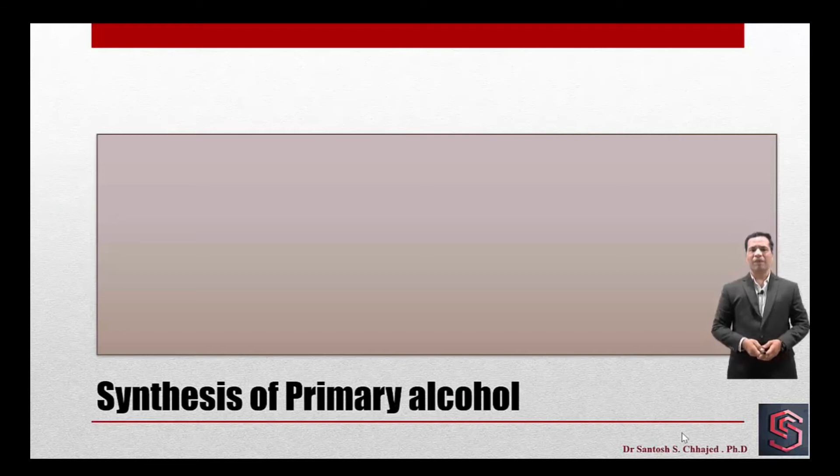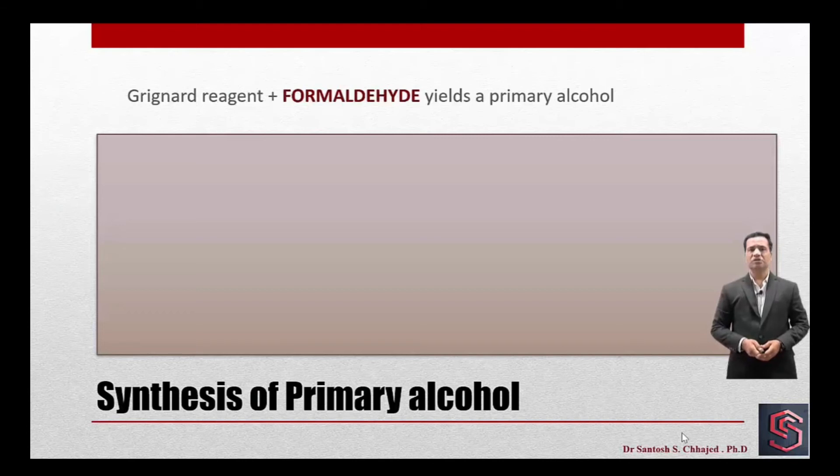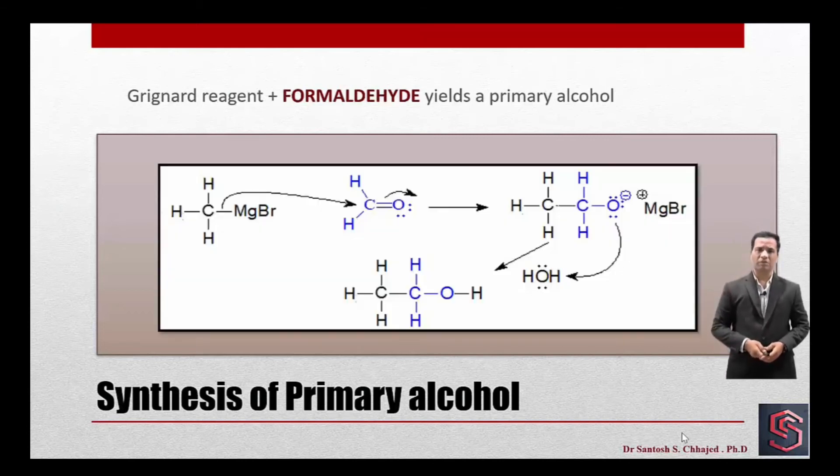Moving forward now, we will see how primary alcohols are formed. The generalized reaction mechanism we have already discussed in the beginning. Now I will just throw light on how primary alcohol can be obtained using Grignard synthesis. When Grignard reagent reacts with formaldehyde, formation of primary alcohol takes place. You could see that intentionally, I have sketched formaldehyde in blue color, so that as it is, it has become present in the structure of the alcohol.